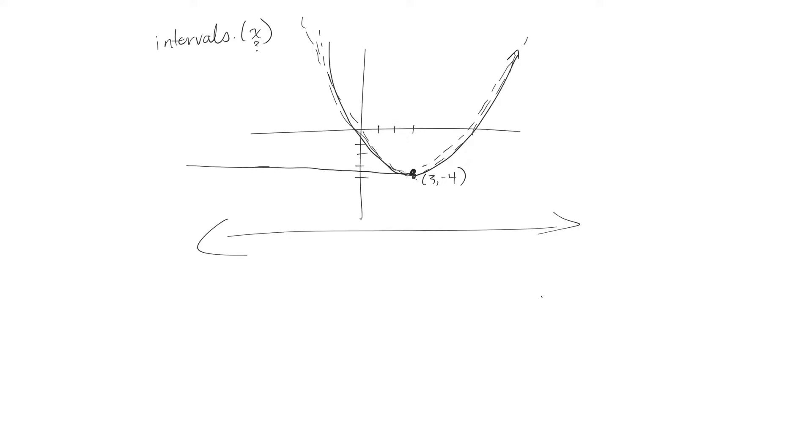So this graph is decreasing as x goes from negative infinity all the way up until it gets to 3, because that's the x value there. So between negative infinity and 3, the graph is decreasing.